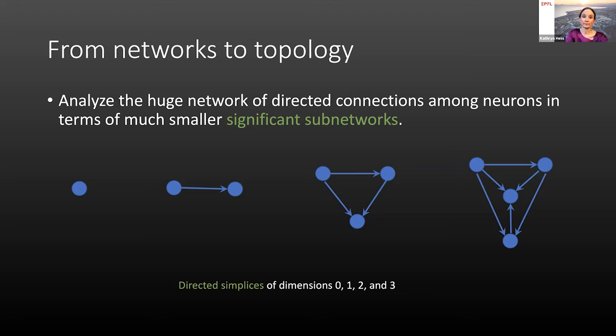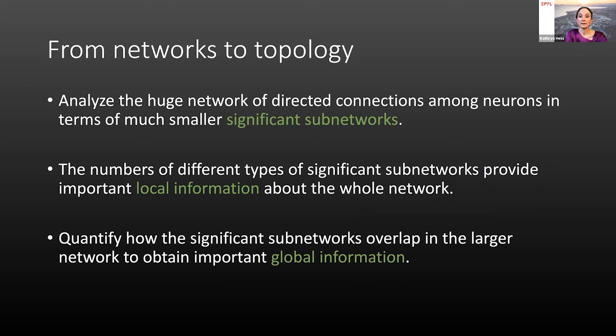To obtain local combinatorial information about the network, one can simply count and record the numbers of significant subnetworks of different types one finds within the huge network. This can already provide considerable insight into the network structure. Often more revealing, but usually computationally considerably more complex to obtain, is global information revealed by determining how the various significant subnetworks overlap in the larger network. I'll provide an illustration in a moment of the sort of overlap we consider. But first, let's take a look at the local information provided simply by counting directed simplices, those little feed-forward networks, within the microcircuit.